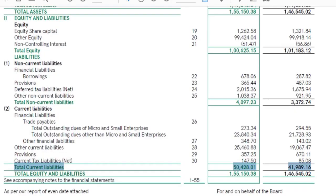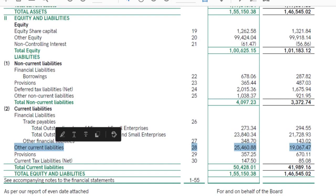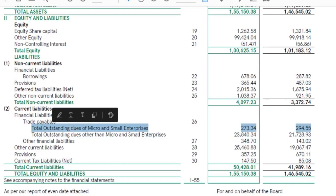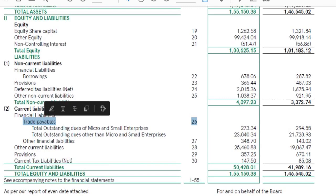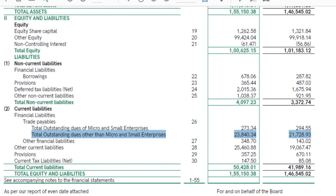What are the major parts of the current liabilities? The major part involves total outstanding dues — other than micro and small enterprises — and other current liabilities. Trade payables: Micro Small Enterprises and other than Micro Small Enterprises. It is about 257 rupees.